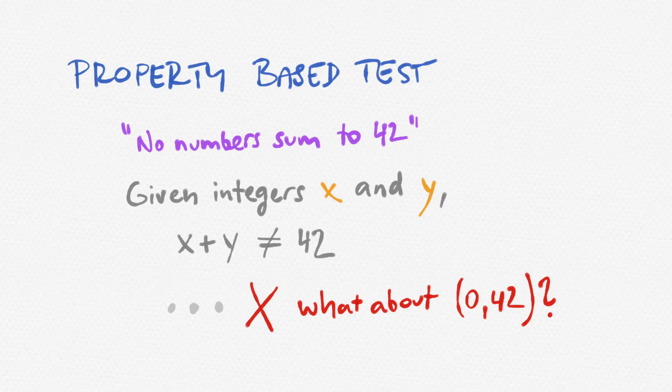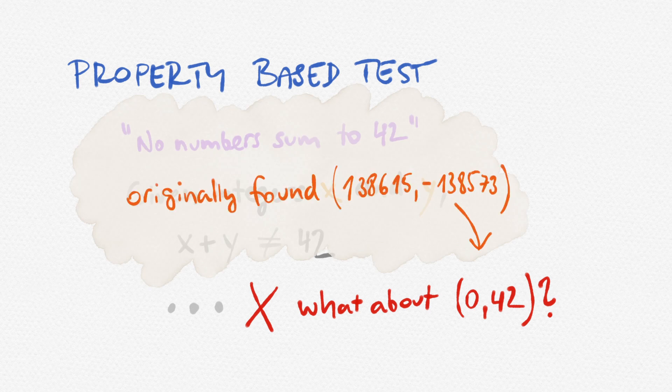This is out of necessity. The randomly generated values can get pretty large pretty fast, and parts of those values might be totally irrelevant to your failing test.